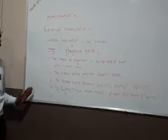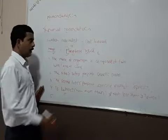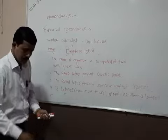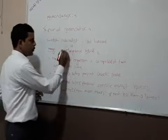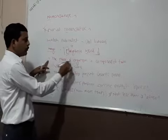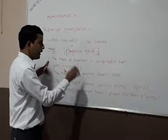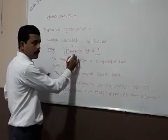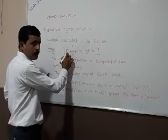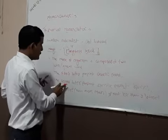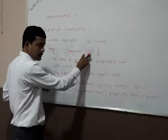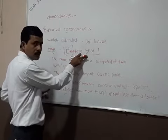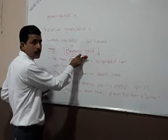This is all about the binomial nomenclature — all these rules are related to it. The name of the organism is composed of two Greek words or Latin words. The first letter represents the generic name, which is a capital letter, and the second letter represents the species, written in small letters.